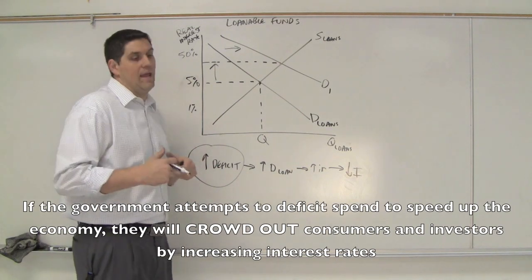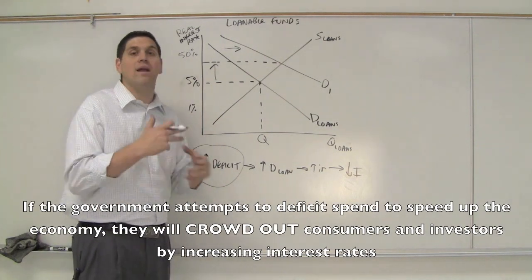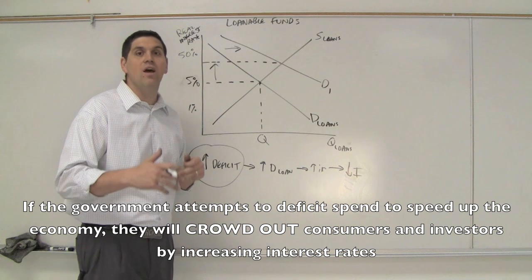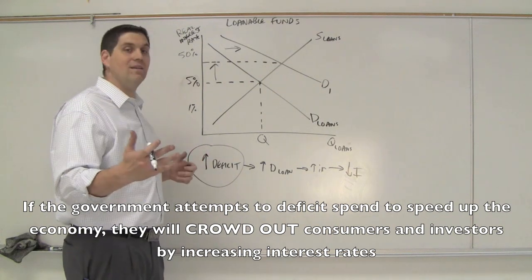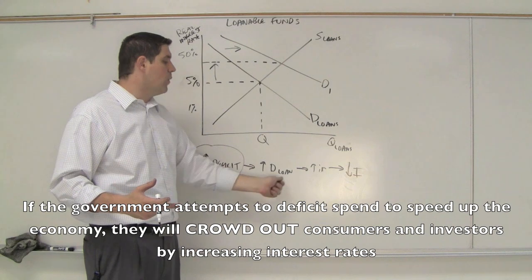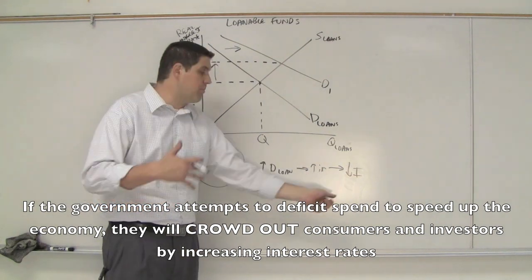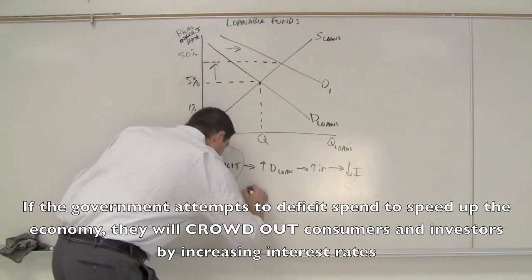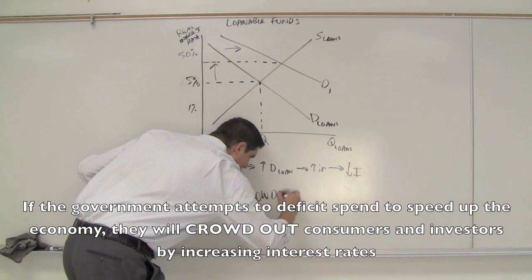And so if the government is increasing its spending, trying to increase G, your government spending, to close a recessionary gap, it does that. But if it runs a deficit, that'll increase the demand for loanable funds, which will increase interest rates, which will actually hurt the economy. It'll actually bring it back down. And that's why this is called crowding out.